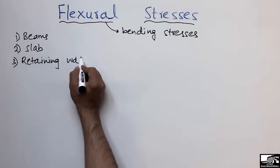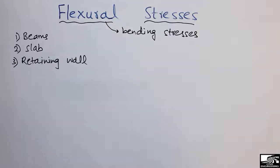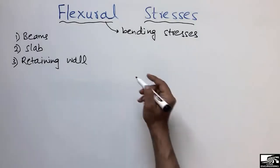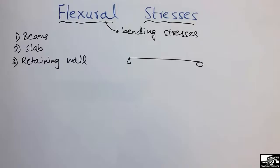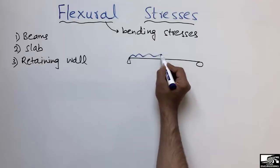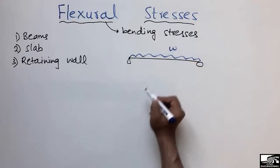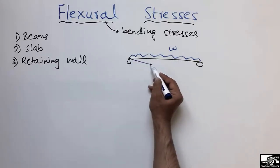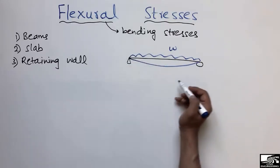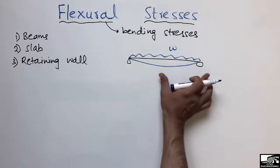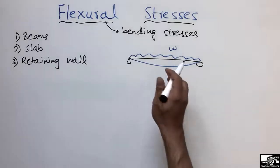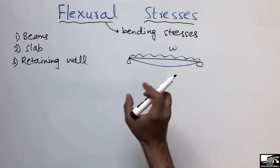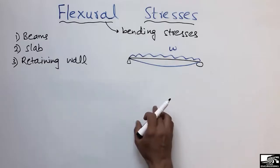We mostly design these three members for the flexure stresses. To understand why these stresses occur, consider a simple example of a simply supported beam with a uniformly distributed load W acting on it. Upon loading, this beam will start to deflect and it will be resisted at the supports, so there is no deflection at the supports. Due to this bending, stresses will occur in the beam, which are known as flexure stresses or bending stresses.